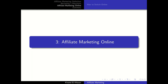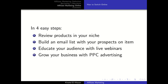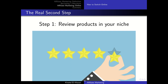Maybe becoming a merchant doesn't fit you quite well — how about being an affiliate marketer online? This can be done in basically four easy steps. First and foremost, you need to review products in your niche. It's easier to get started as an affiliate because you are skipping the idea and product creation parts of becoming a merchant. Reviewing products in your niche can be done through a YouTube channel, blogs, or even live streams on social channels, since you already use plenty of products — all you have to do is pick one and start publicly talking about them.